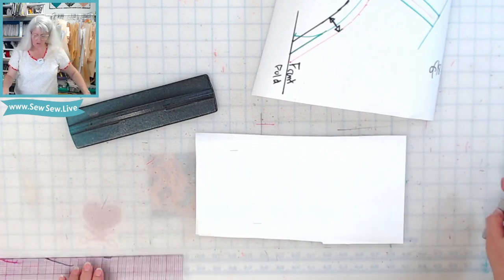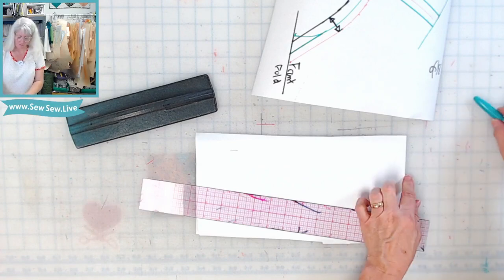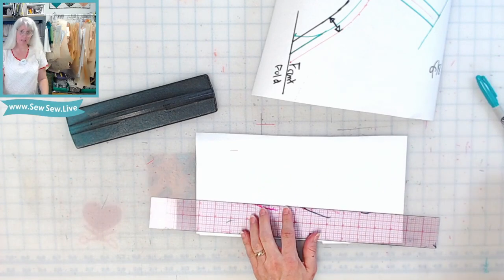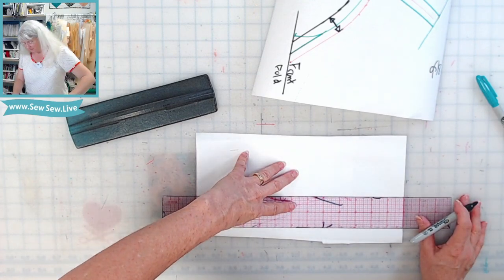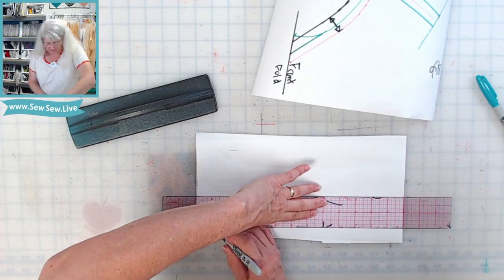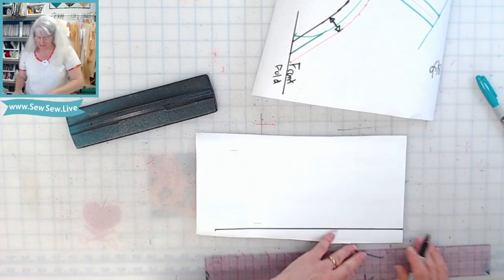Now I'm going to draw a line from this fold. This fold right here is going to end up being the center back neck. So we're going to draw a perfectly perpendicular straight line to that center back fold, just like that.